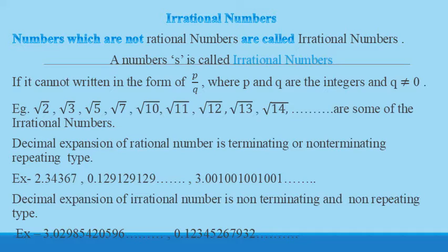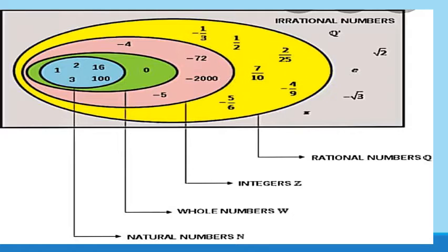Now see here it forms the real number system. First the natural number, then whole numbers. If you will include zero in the natural number it forms the system of whole number. Negative of natural numbers then it forms the integers, then rational numbers and the numbers which are not rational numbers are the irrational numbers.